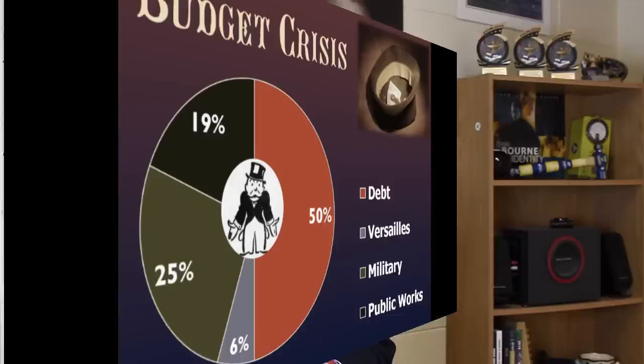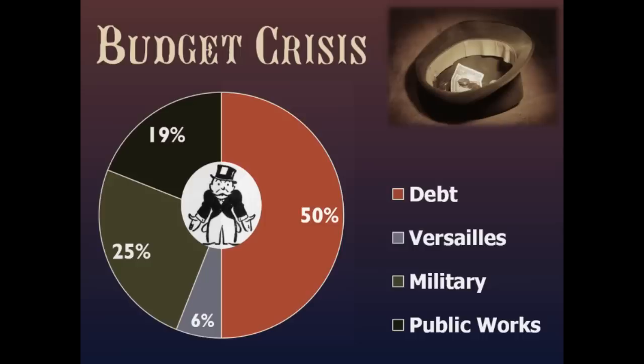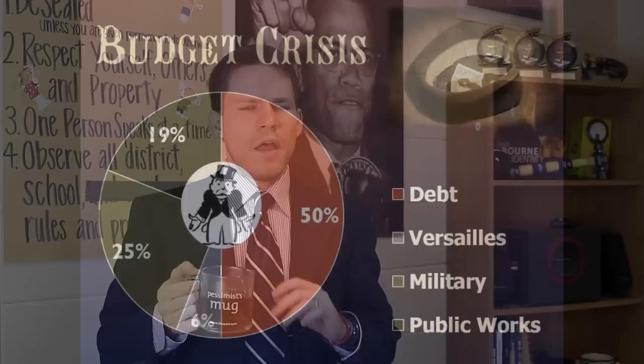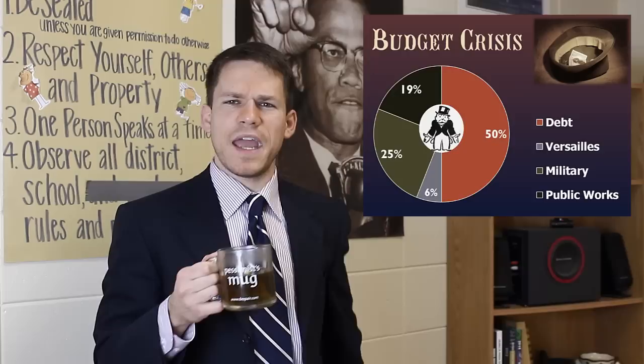When we look at the French national budget in the 1780s, 50% of the French budget was going to service this massive debt from the Seven Years War and from the American Revolution. Then 6% of the budget is going to maintain Versailles.